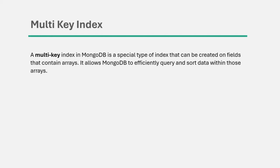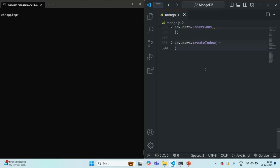A multi-key index in MongoDB is a special type of index that can be created on fields that contain an array. It allows MongoDB to efficiently query and sort data within those arrays. Let's try to understand it with an example, and to do that we are going to create the employees collection.